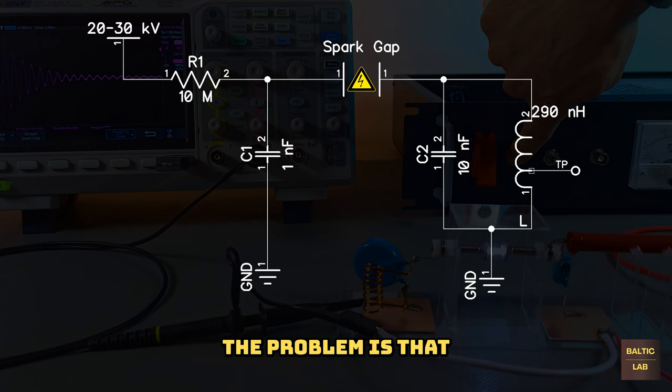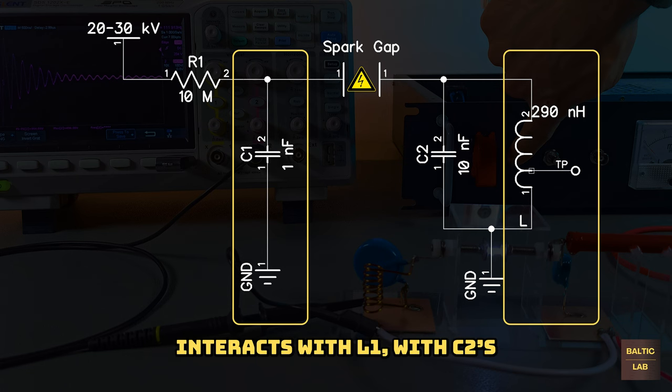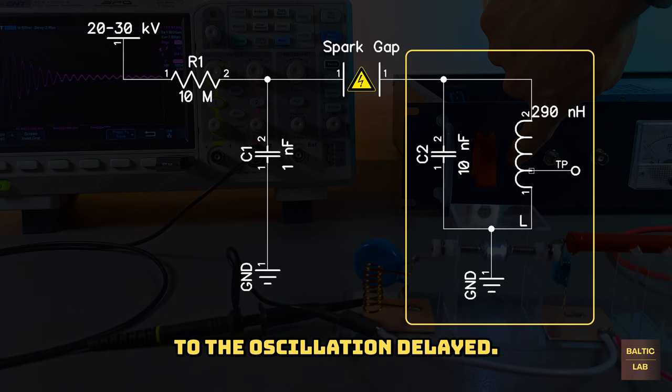The problem is that the moment the spark gap is triggered, C1 is fully charged and C2 is empty. Initially, the fully charged C1 alone interacts with L1, with C2's contribution to the oscillation delayed.